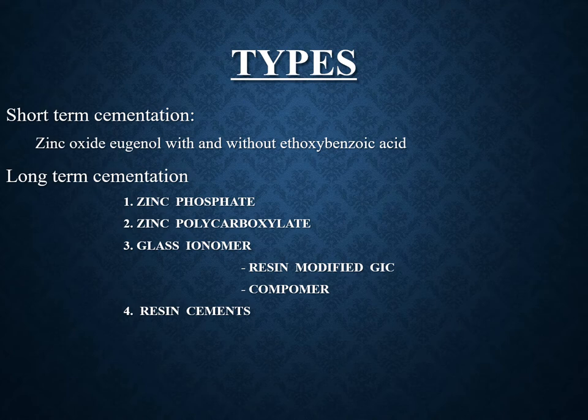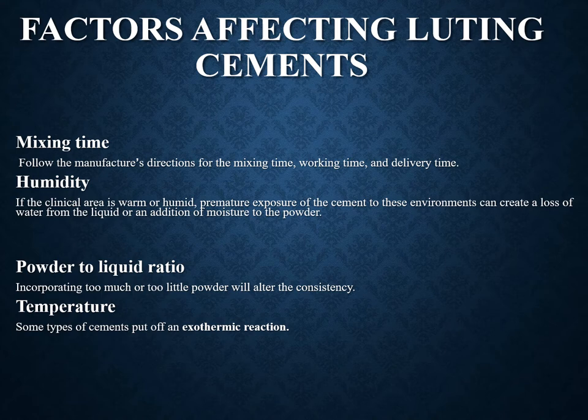Coming to the types, we can divide broadly into short-term cements and long-term cements. In short-term cements there is zinc oxide eugenol, with and without ethoxy benzoic acid. For long-term cementation, it consists of zinc phosphate, zinc polycarboxylate, glass ionomer — which can be divided into resin modified GIC and compomers — and then resins.